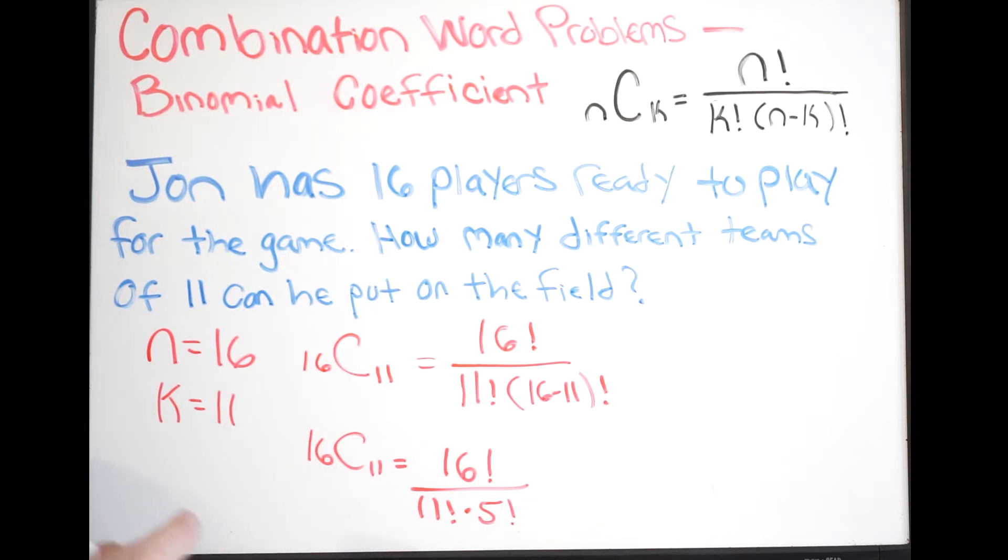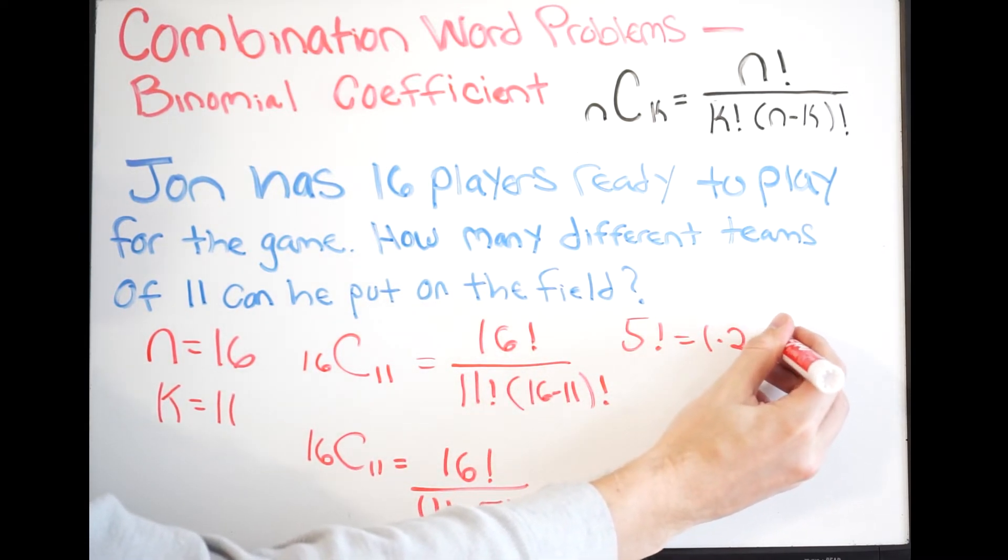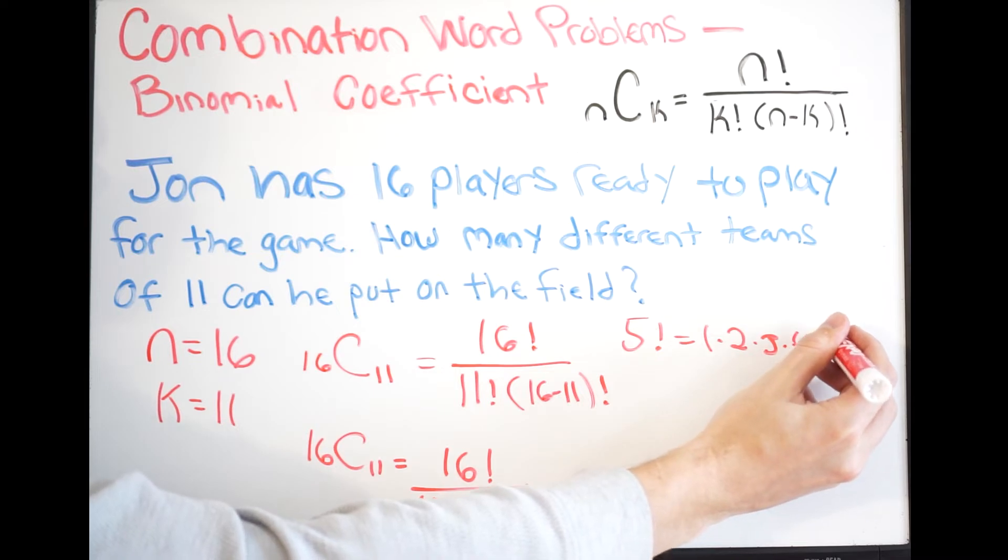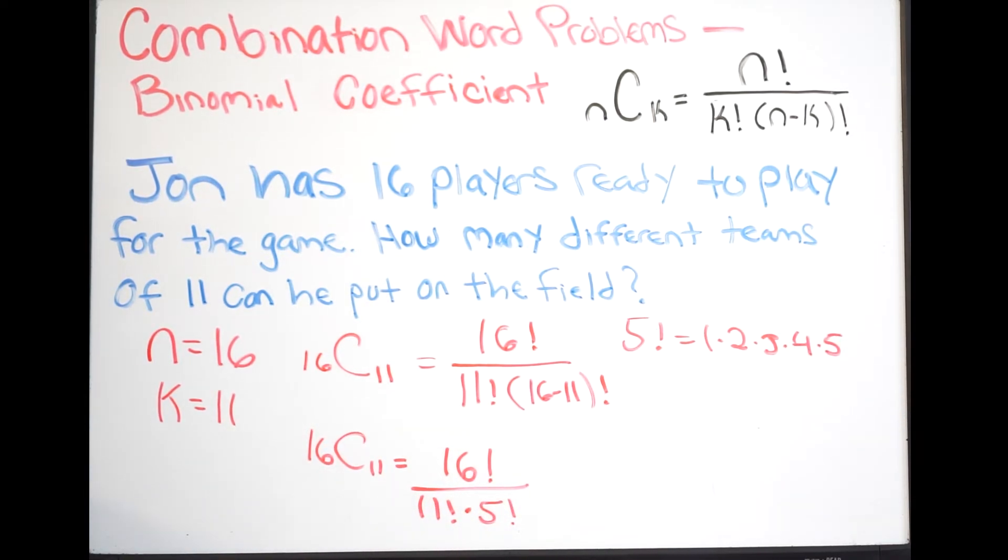So for example if I look at 5 factorial this can simply be written as 1 times 2 times 3 times 4 times 5. Now luckily our calculator can do this out, we have that ability to put this into our calculator so that's what we're going to do.